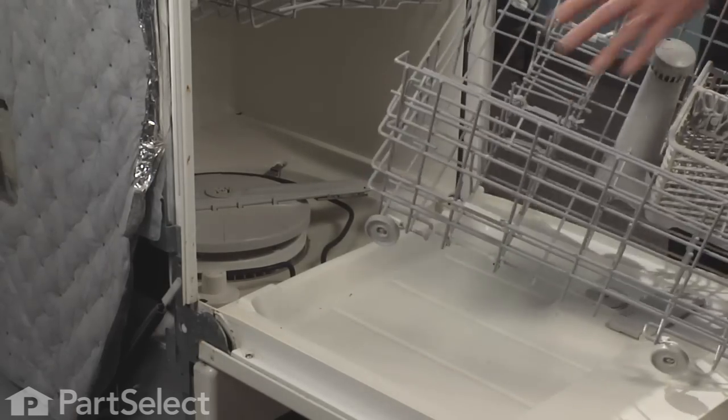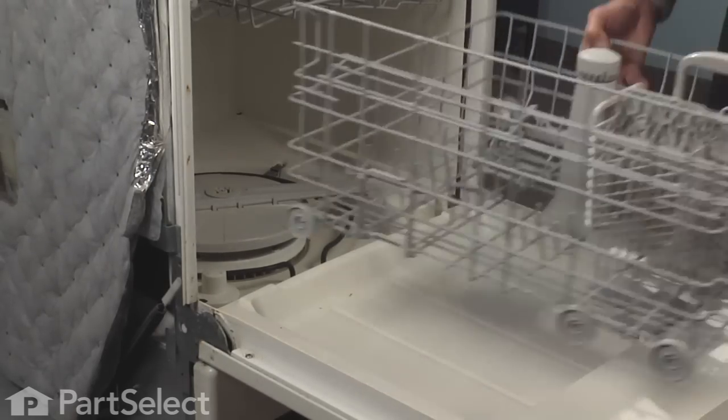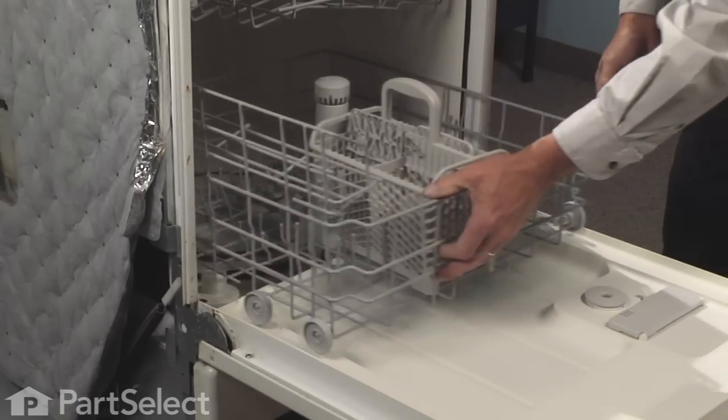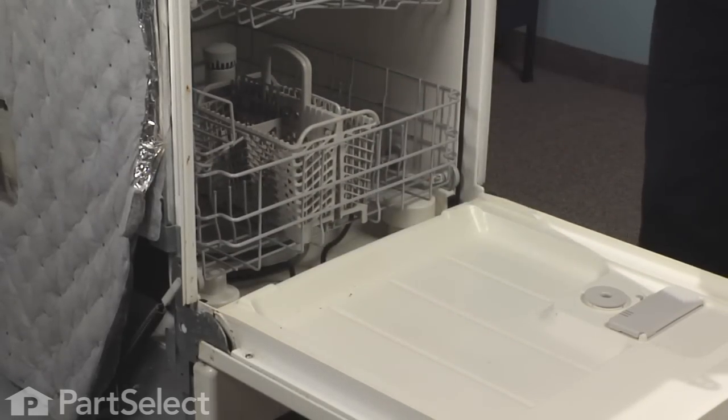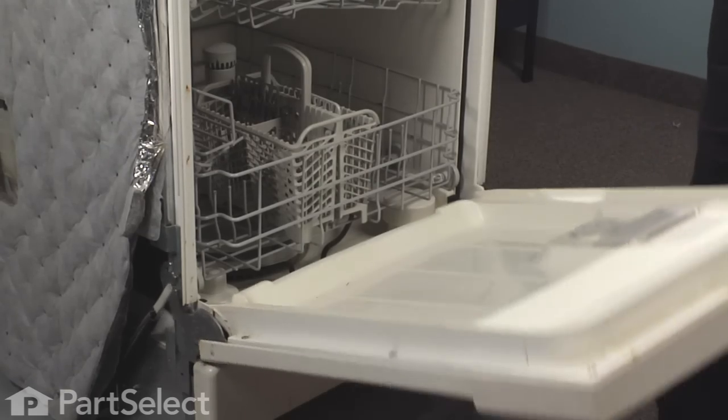Now we need to reinstall the lower rack, making sure the tine portion is at the back of the dishwasher. Slide it into place, make sure it moves freely, and our repair is complete.